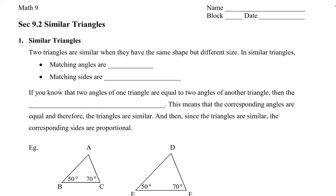Now two triangles are similar when they have the same shape but different size. So in similar triangles, the matching angles will be equal, and matching sides are going to be proportional. And I'll show you what this means in a little bit.